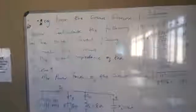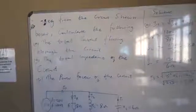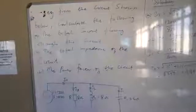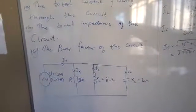Okay, let us read this example. From the circuit shown below, calculate the following: the total current flowing through the circuit, the total impedance of the circuit, and the power factor of the circuit. This is a parallel RLC circuit.